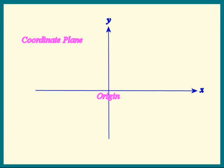He called these two lines coordinate axes. The horizontal line, he called the x-axis. The vertical, he called the y-axis. These two lines met at the origin.